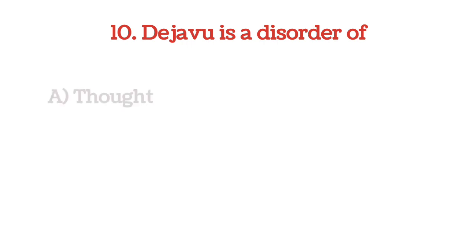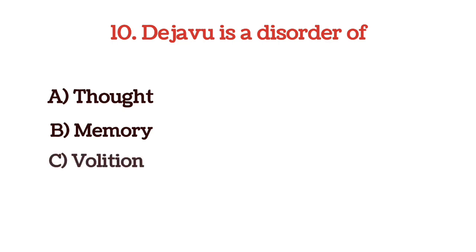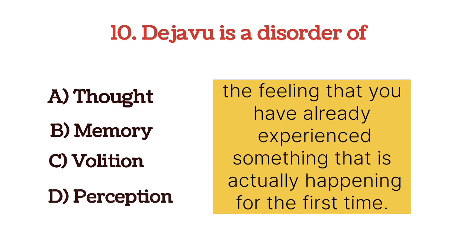The next question: deja vu is a disorder of — options are thought, memory, volition, and perception. Deja vu is a feeling that you have already experienced something that is actually happening for the first time — matlab, first time aapke saath kuch incidents ho raha hai, lekin aapko aisa lag raha hai ki yeh pehle bhi ho chuka hai. It is a disorder of memory. So the answer is option B, memory.